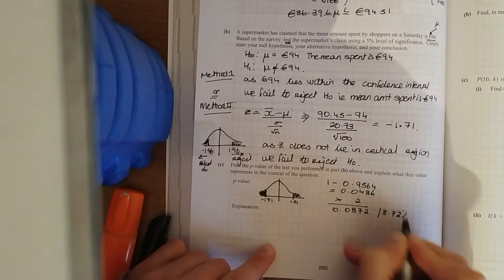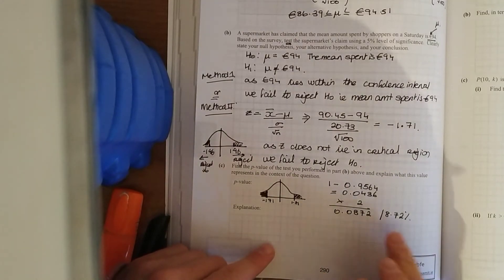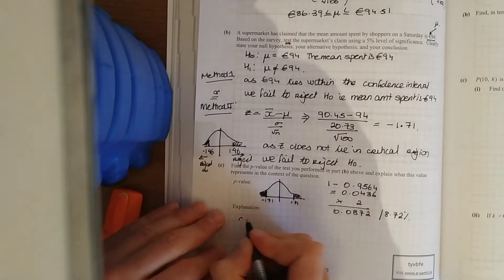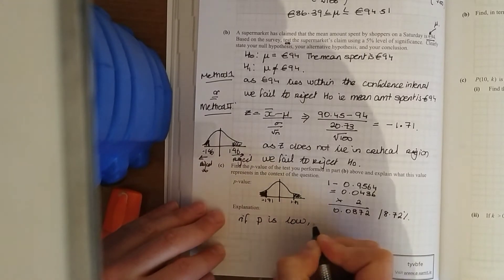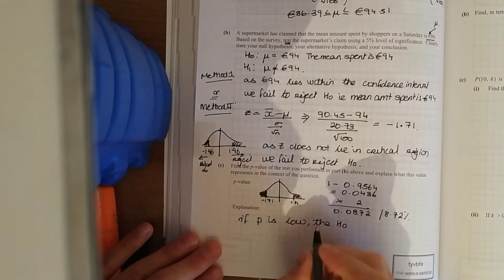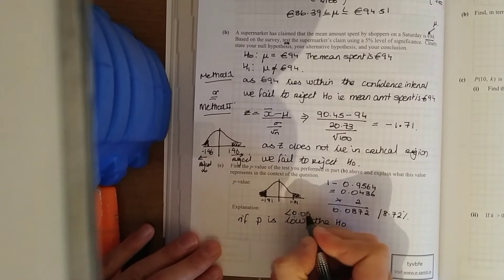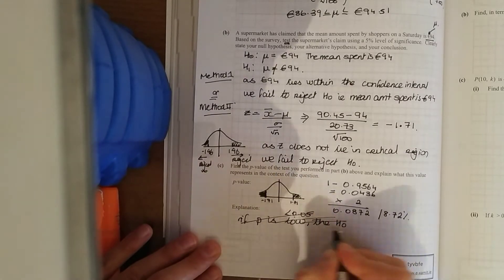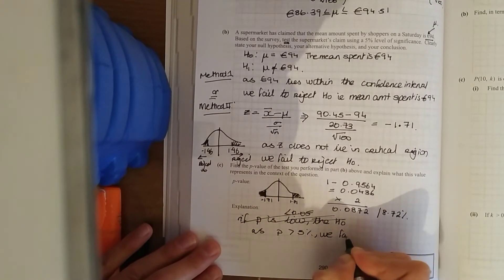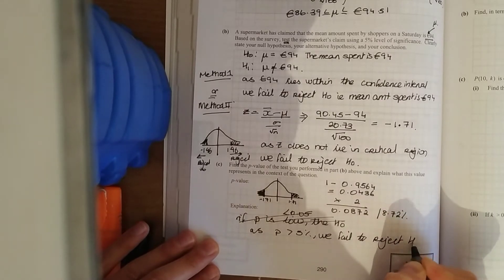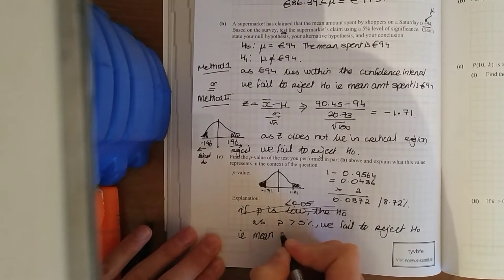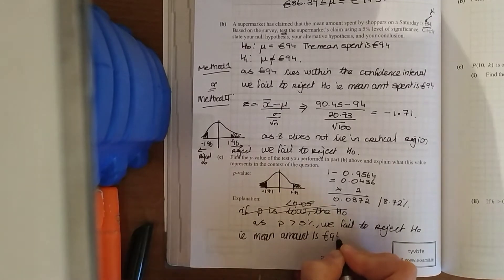Or 8.72%. Now what you've got to remember is, if this is greater than 5%, we fail to reject. Or the way I remember it, if p is low, the null must go. So you definitely remember that. If p is low, the null must go. The null means the null hypothesis. Now what they mean by low is less than 5%. Is that less than 5%? No. So if p is low, the null must go. So as p is greater than 5% or 0.05, we fail to reject that null. Fail to reject null hypothesis. And what this value means, i.e. mean amount is 94 euro.